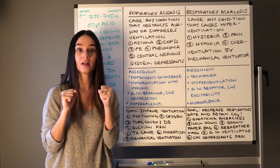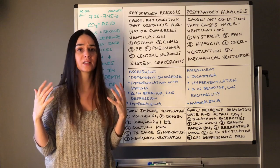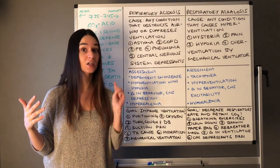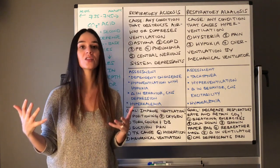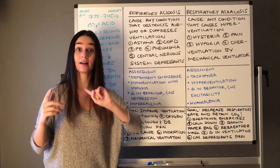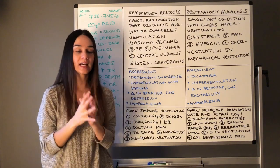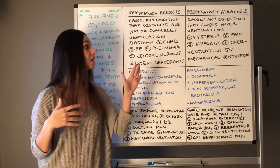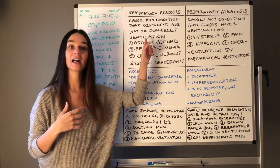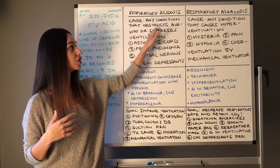Think asthma — narrowing and inflammation of airways. For asthmatic clients, you want to open those airways with a bronchodilator and get oxygen on them. But in terms of respiratory acidosis, if we can't get oxygen in, we're not getting CO2 out either. With asthma's airway narrowing, CO2 is retained. COPD patients also retain CO2, meaning they retain acid and are at high risk for respiratory acidosis.